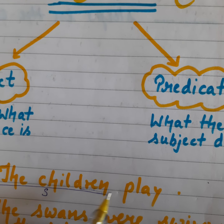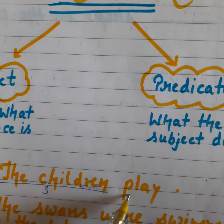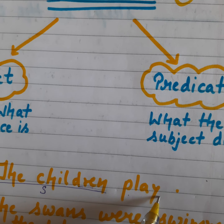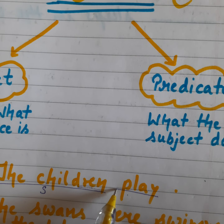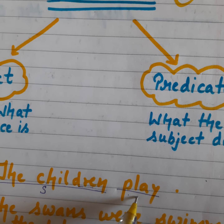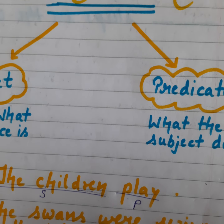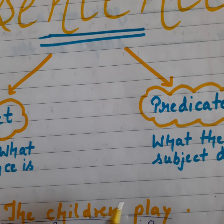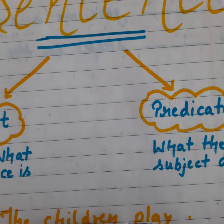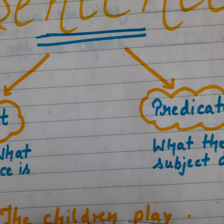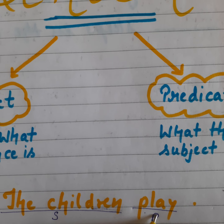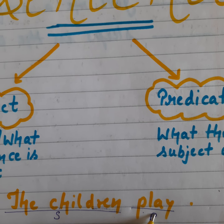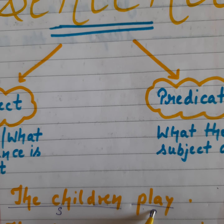And what are the children doing? They are playing. So this part is predicate. This part is telling us what the children are doing — the children are playing — so this is predicate.